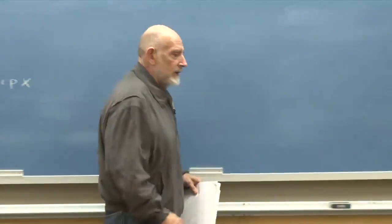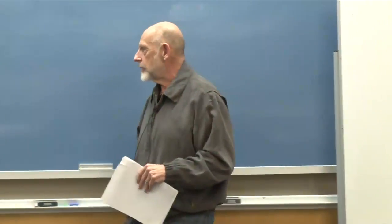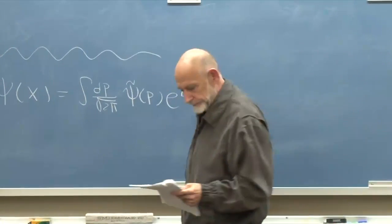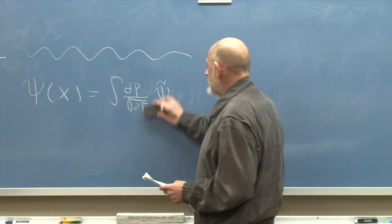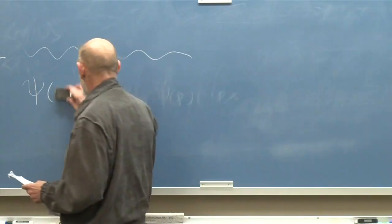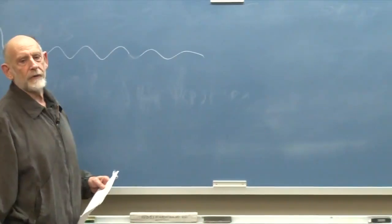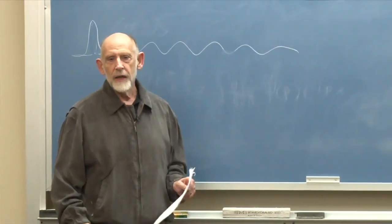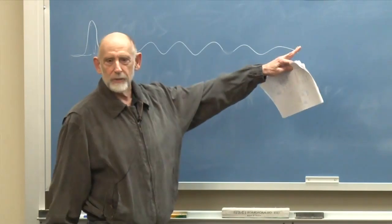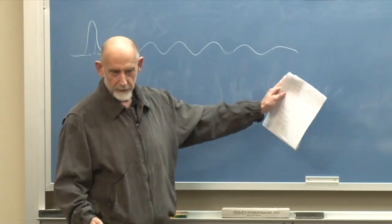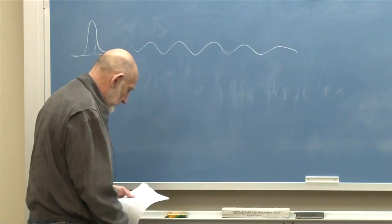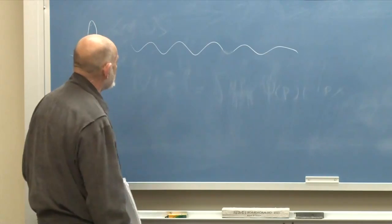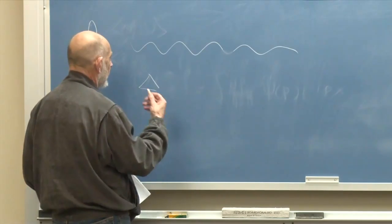Let's try to do a little bit better — let's define the notion of uncertainty and then see if we can prove a theorem. I'm going to prove a slightly simplified version of the theorem, mostly because there's just too much on the blackboard if I prove the full general theorem. The simplified version contains the basic ingredients. First of all, what is meant by the uncertainty in a variable?